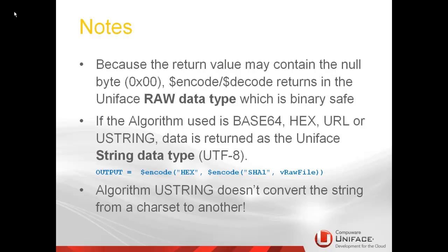Some notes about encoding and decoding. Because the return value may contain a null byte, $encode and $decode return in the Uniface raw data type, which is binary safe. So you should assign the output of the function to a variable of type raw and not string. If you need the result in a string variable, then you can encode the result again by using base64, hex or URL. Here's an example of how to do that. The UString algorithm was specifically made to change the data type from raw to string. For the other way around, to change from string to raw data type, you can use URAW. Remember that UString does not encode or convert a string, and it doesn't convert between character sets. All it does is convert the data type.